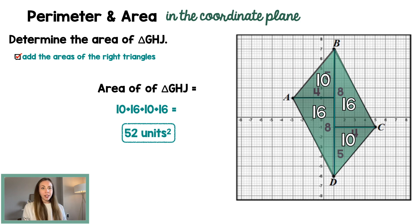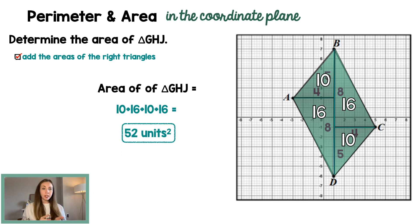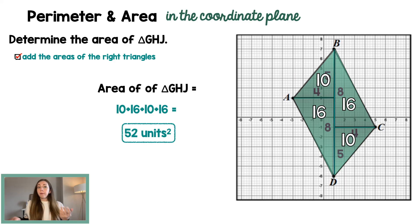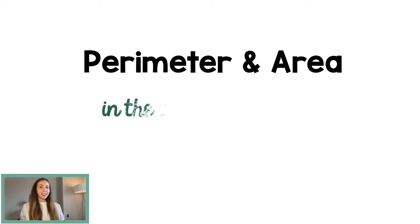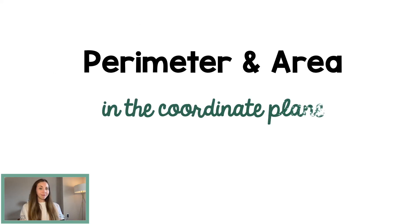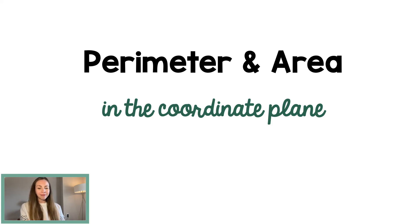So we have seen lots of different strategies, including using the distance formula, building right angles on the outside, and building right triangles on the inside. That pretty much covers it for perimeter and area in the coordinate plane. I hope you've enjoyed watching this video, and if you have any questions, please let me know. Thanks.